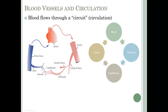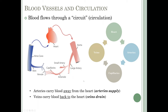In this chapter, we're focusing on the vessels themselves. Blood flows from the heart out through arteries — arteries carry blood away from the heart. We also use the terminology 'arteries supply,' like arteries supply the brain or liver with blood. The blood then passes through the capillaries and goes back through the veins to the heart. Veins carry blood back to the heart, and we use the terminology 'veins drain,' like veins drain the brain or liver.